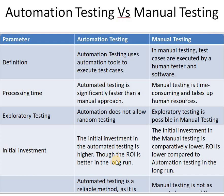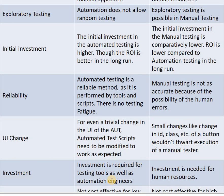Our next parameter is reliability. Automated testing is a reliable method because it is performed by tools and scripts. In manual testing, the testing is done by a human being, so it is less accurate due to the possibility of human errors. That's why automation testing is more reliable than manual testing.